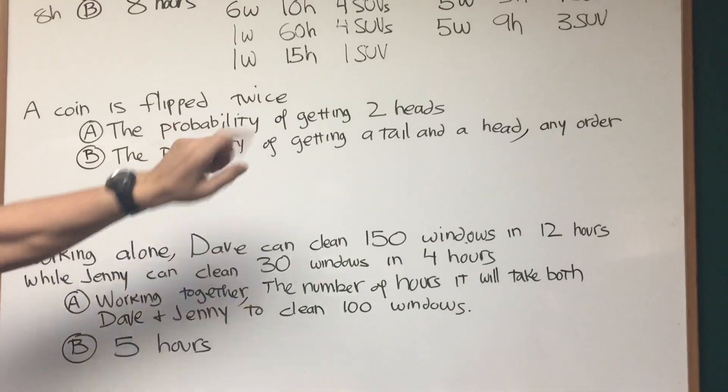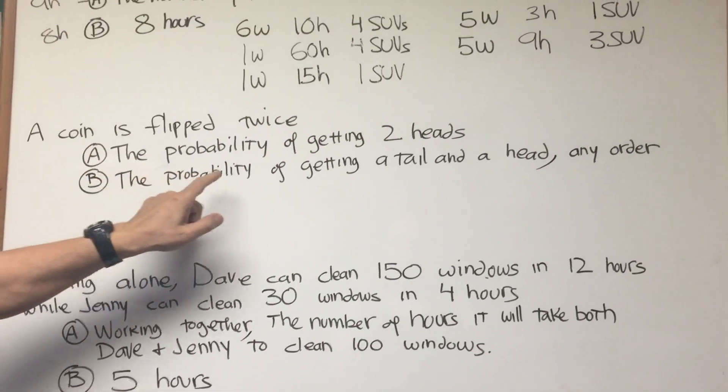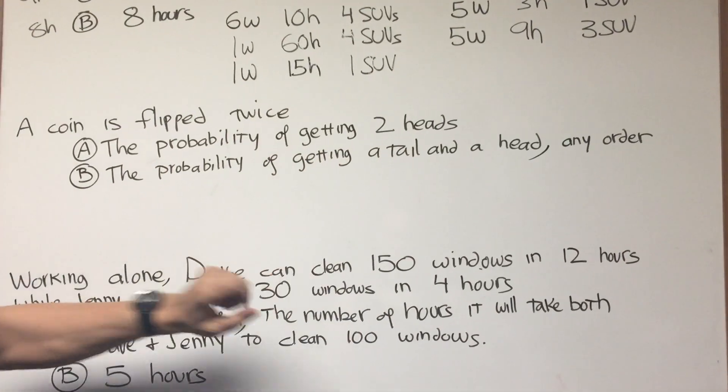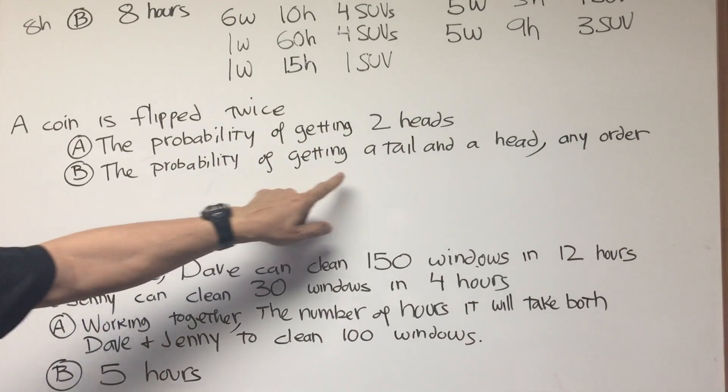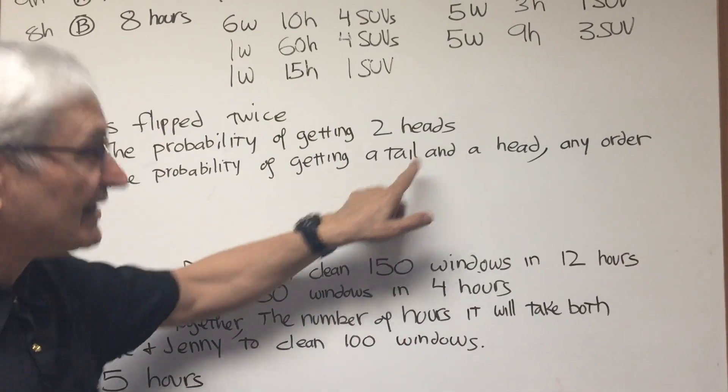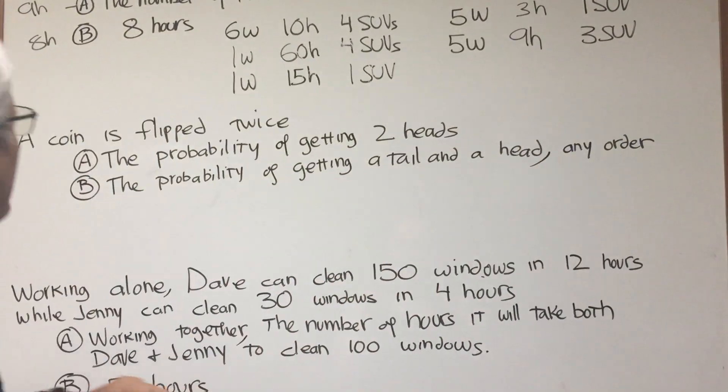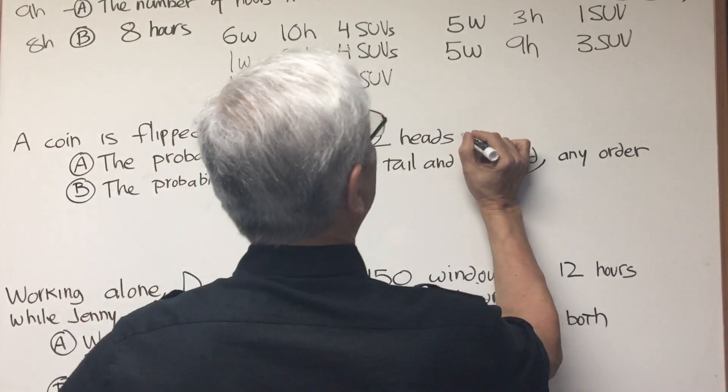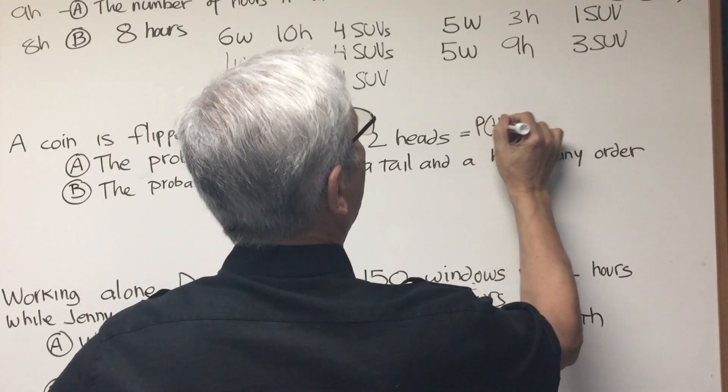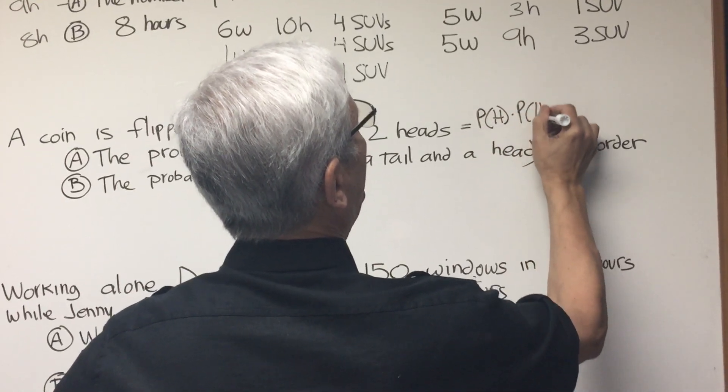A coin is flipped twice. Quantity A, the probability of getting two heads. Quantity B, the probability of getting a head and a tail and a head, any order. All right, well, let's look at this.